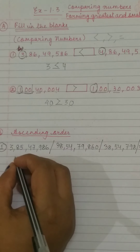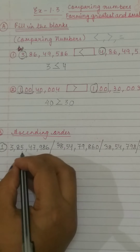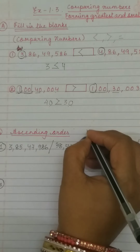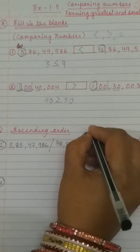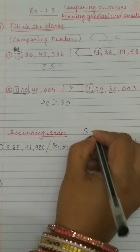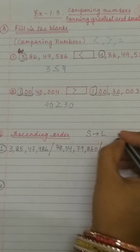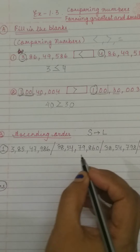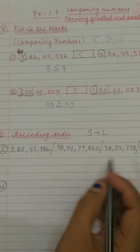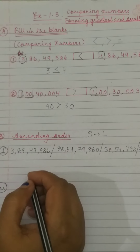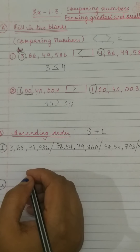Next we will go for ascending order — question number B. What is ascending order? Ascending order means arrangement of numbers from the smallest to the largest number. So we will see which is the smallest number, then compare with the others. How will we know which is the smallest or largest? We will count all the digits present in every number.